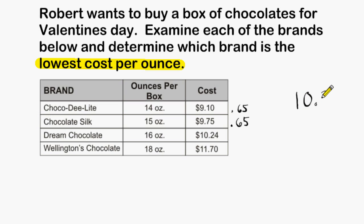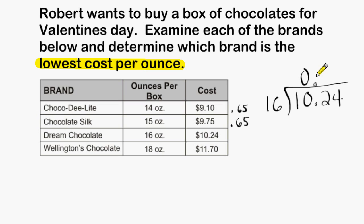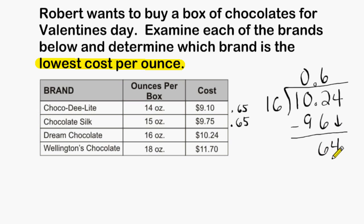For the third brand, the price is $10.24 divided by 16 ounces. We bring the decimal straight up and begin division. 6 groups of 16 fit into 102, giving 96. 102 minus 96 is 6; we drop down the 4, and 4 groups of 16 fit exactly into 64. The price of the third brand is 64 cents per ounce.